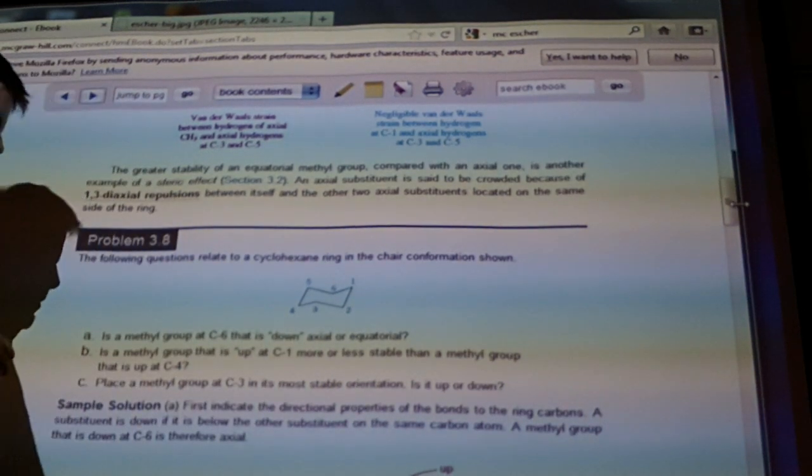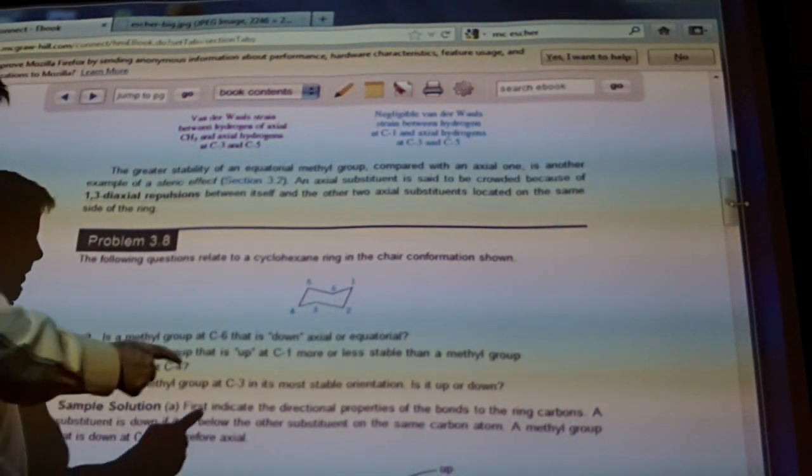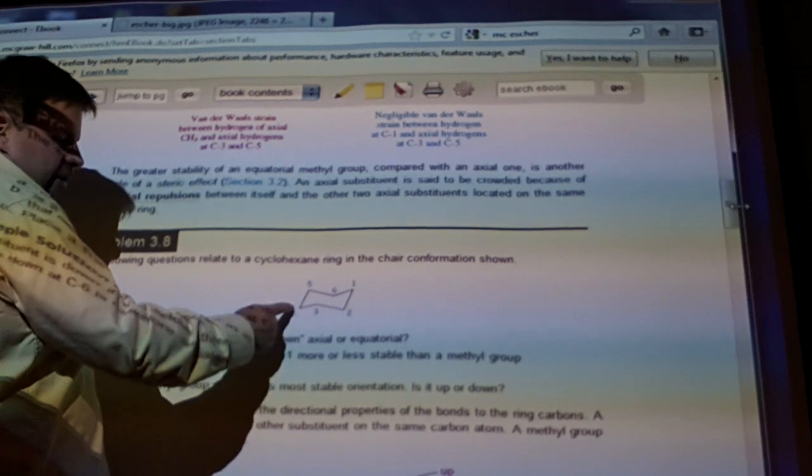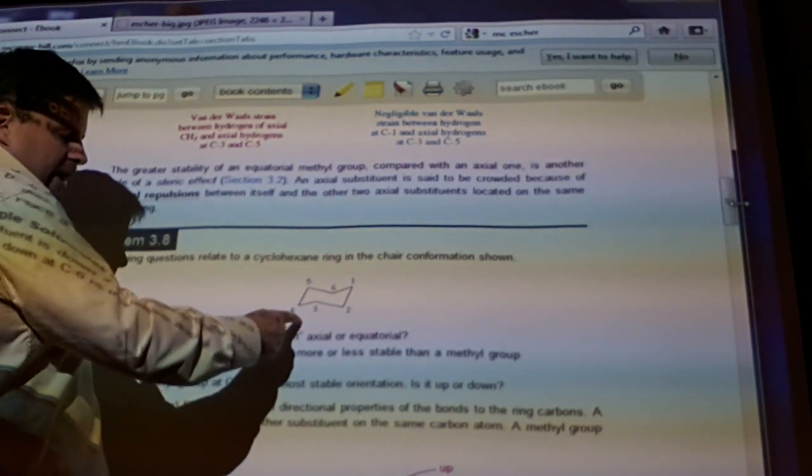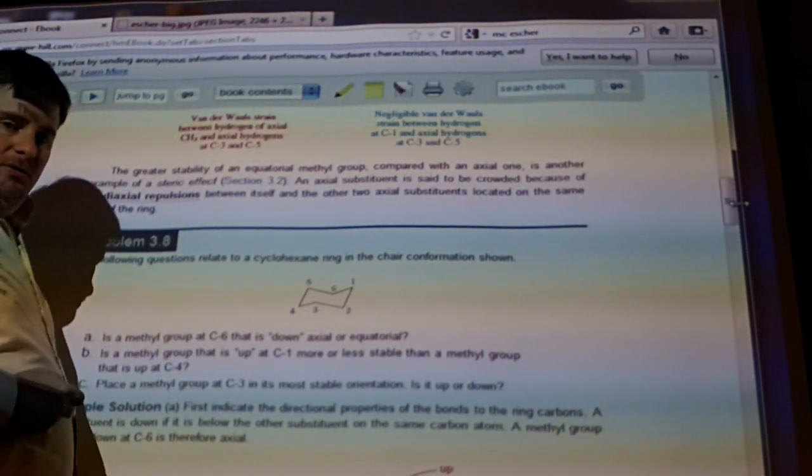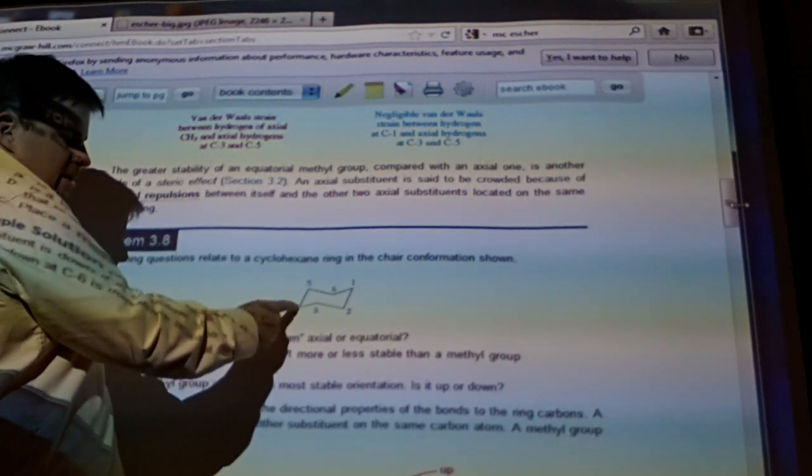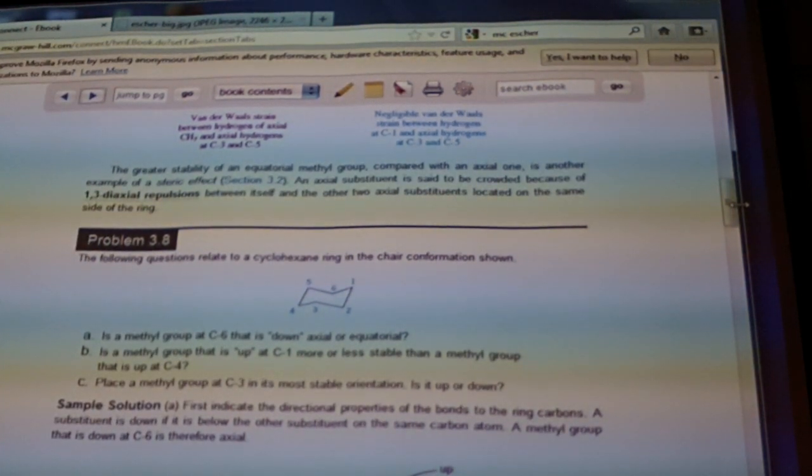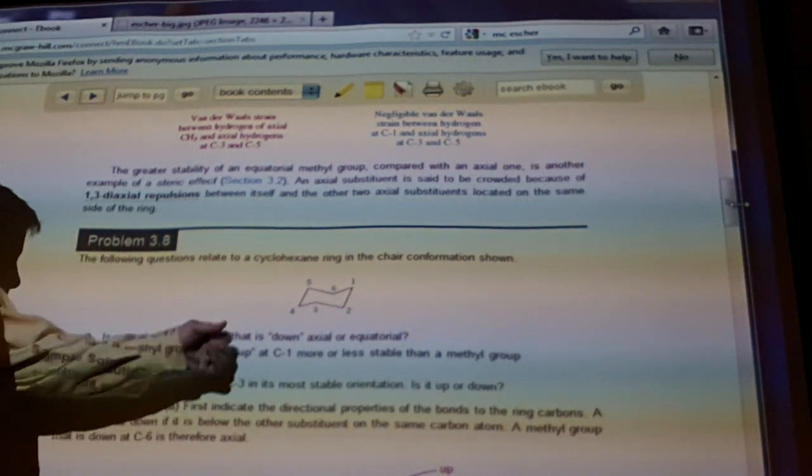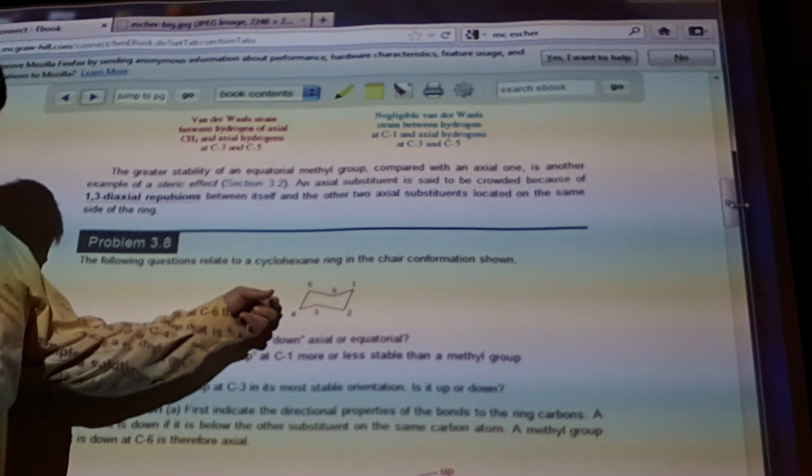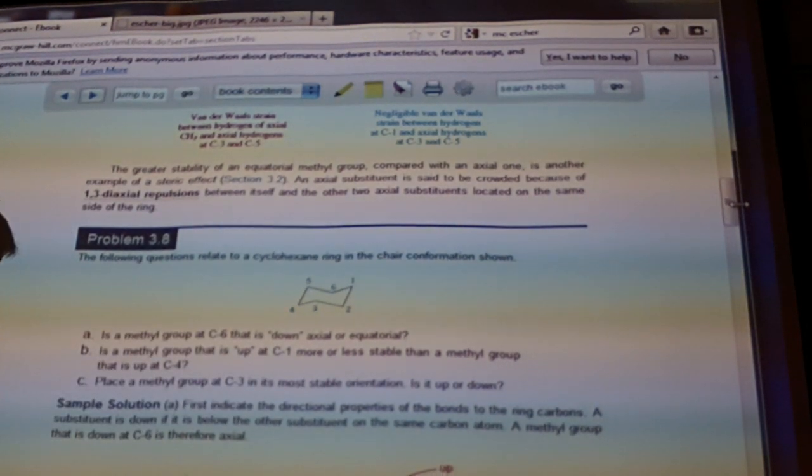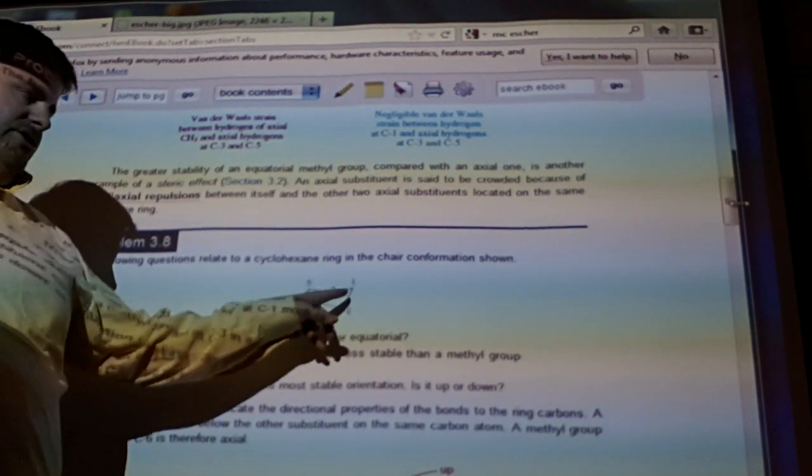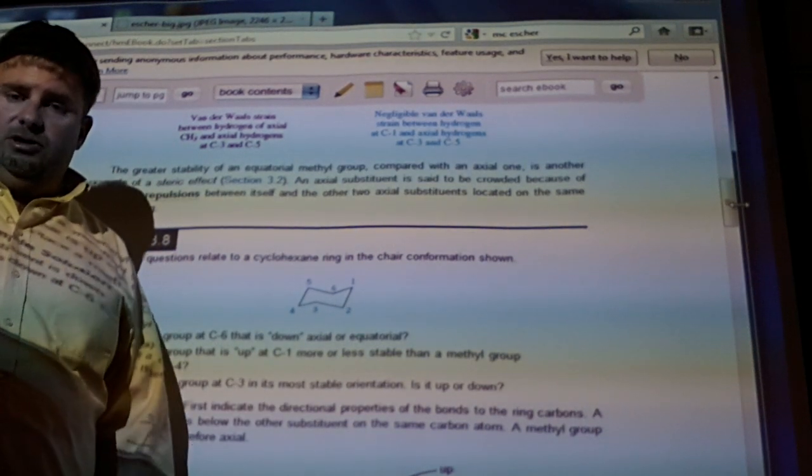At C4 is a methyl group that's up. I've got an axial that's pointing down and an equatorial that's up with respect to whatever's pointing down. So this thing over in this position, this methyl group, is going to be equatorial. Remember, equatorial positions here are going to produce less strain. So as a result, the C4 methyl group that is in the up position is going to be more stable than one that's in the axial position on C1.